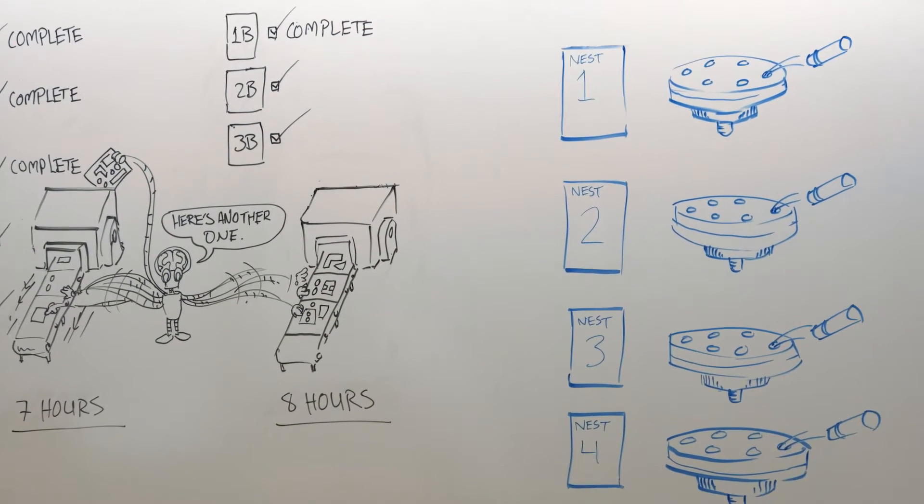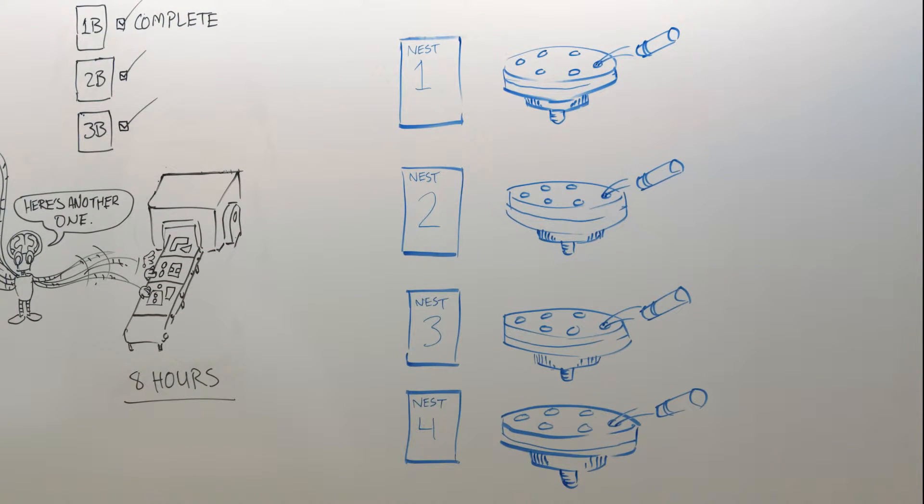In an advanced nesting system, the setups between nests are considered to minimize tool changes and speed up production. Any time you interrupt this plan with a special nest, you increase your setup costs.